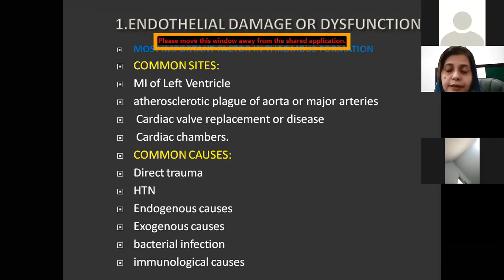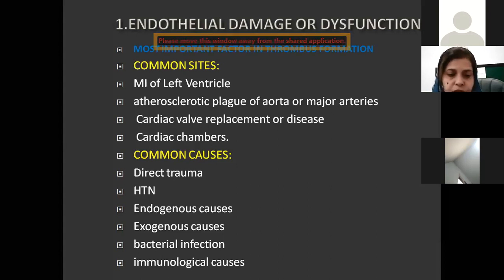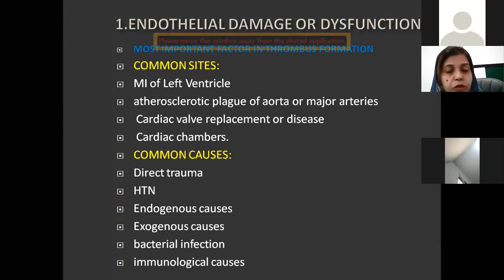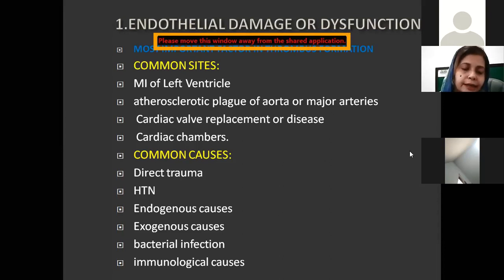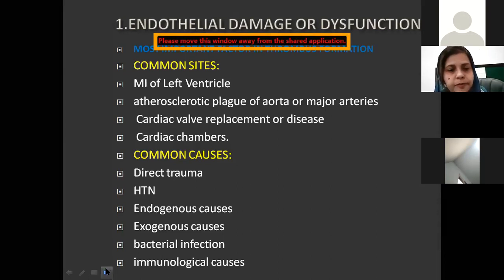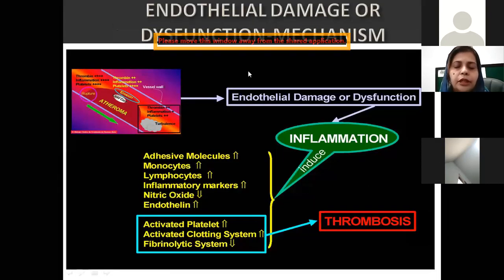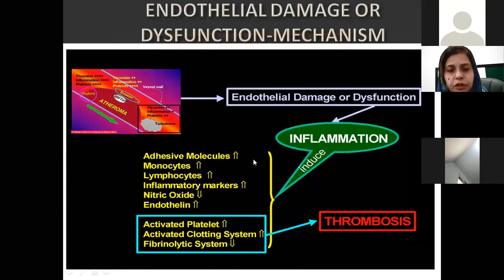These common causes include either direct trauma to the vessel, hypertension, or endogenous causes such as toxins, or exogenous causes like trauma — even bacterial infection releasing certain toxins into the circulation — or antigen-antibody diseases involving antigen-antibody reactions and their deposition on the endothelium. This is the normal pathophysiology of how endothelial damage or dysfunction gives rise to thrombus formation.